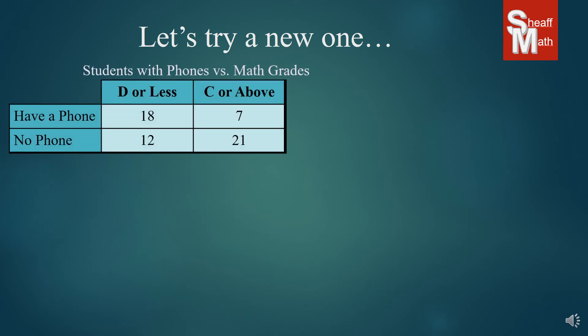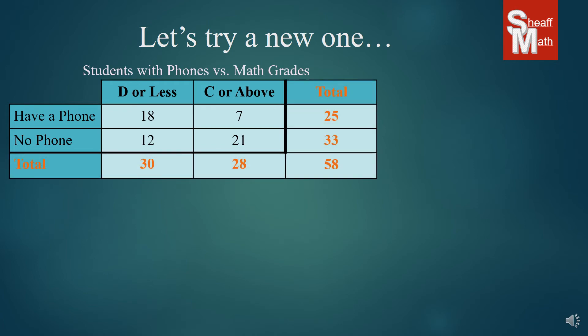All right, here is a new one. This is comparing students with phones versus their math grades. So on the left we have kids who have a phone and no phone, and then the two columns are grades of D or less or C or above. And so the question, well first we have to put in our totals column and rows.